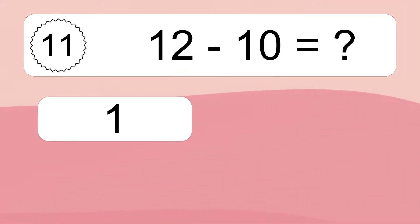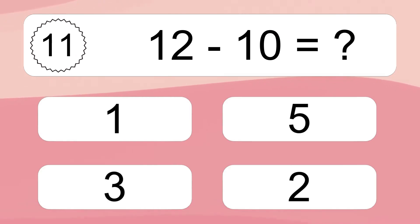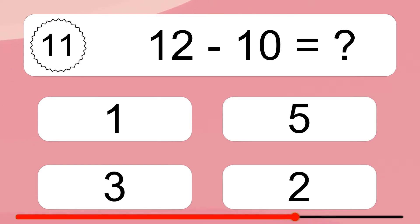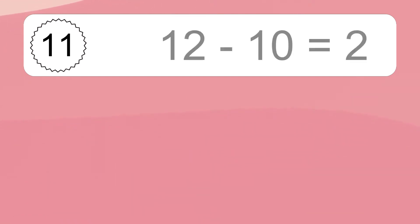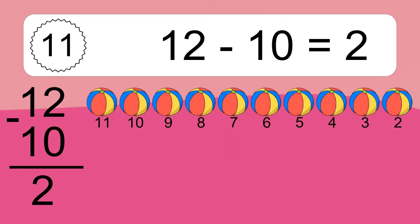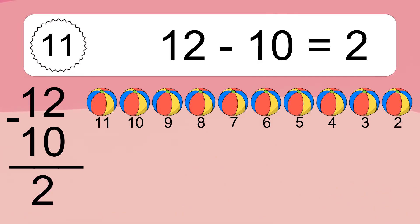12 minus 10 equals what? 12 minus 10 equals 2. Let's count it: 11, 10, 9, 8, 7, 6, 5, 4, 3, 2.